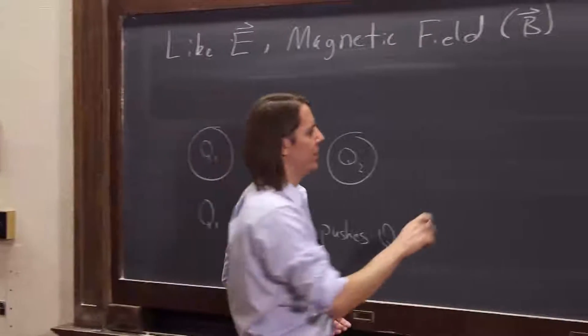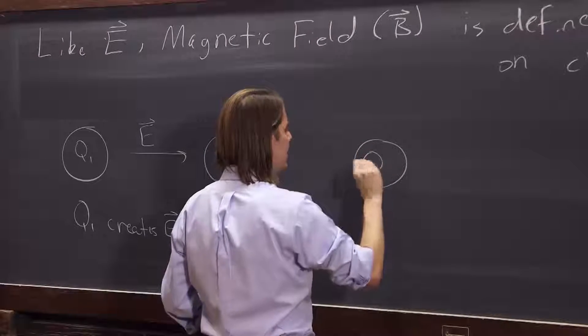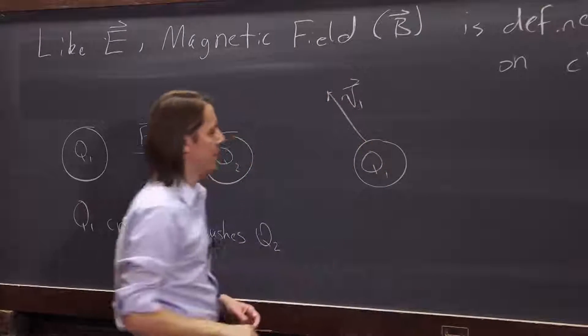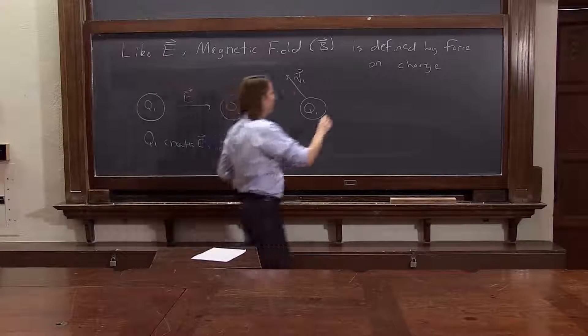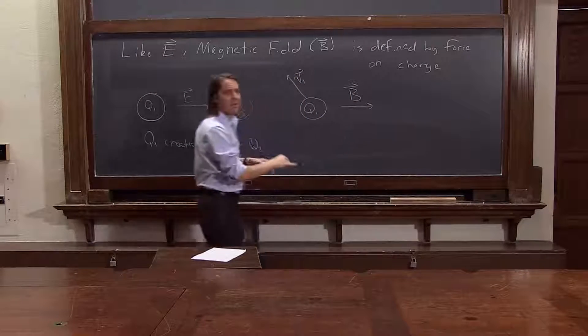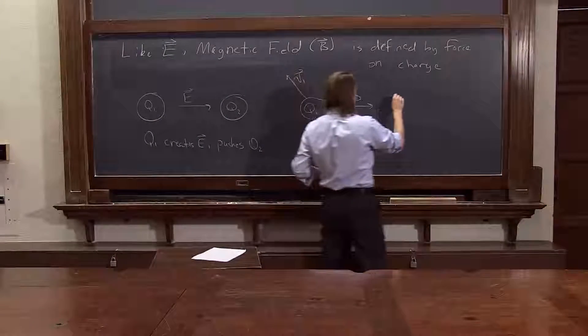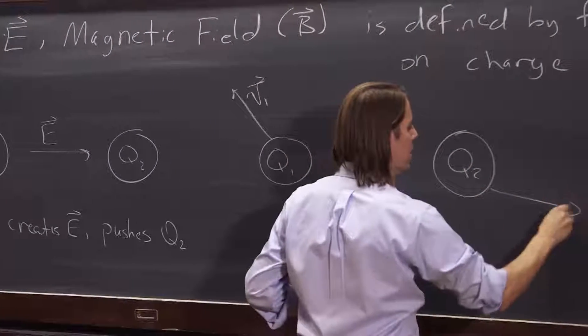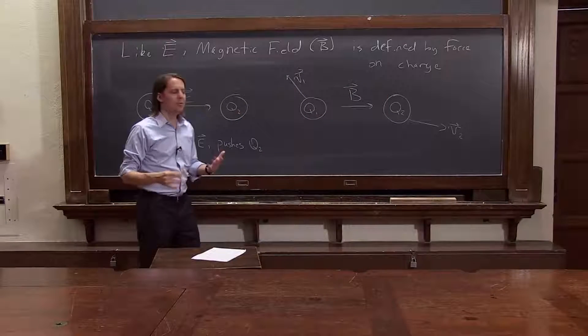But magnetic field, here's how it's different. For the magnetic field, at this level, the only difference is it's moving. A moving charge creates a magnetic field, and this is just a schematic, that's not necessarily the direction that the magnetic field would be. It creates some magnetic field that pushes a moving charge.